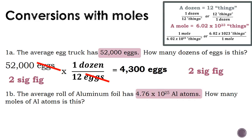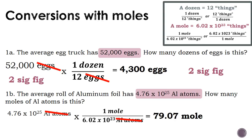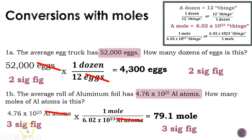Problem 1b says the average roll of aluminum foil has 4.76 times 10 to the 23rd aluminum atoms. We want to figure out how many moles of aluminum atoms this is. We start with the number given in the problem. Atoms becomes our 'things,' so we use the conversion factor replacing 'things' with aluminum atoms. Aluminum atoms cancel, and our answer is in moles. Doing the math and checking sig figs, our final answer is 79.1 moles.